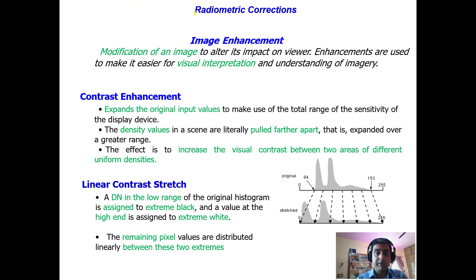Radiometric corrections can be achieved by image enhancement techniques. Image enhancement is the modification of an image to alter its impact on the viewer — just like applying a filter to a photo on your mobile, making it appear more beautiful, contrasting, and discriminating than the original. Enhancements are used to make it easier for visual interpretation and understanding of the imagery.